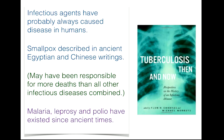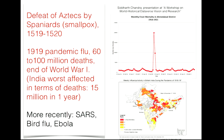Infectious agents have probably always caused disease in humans. Historical records from 2000 to 3000 years ago describe smallpox in Egyptian and Chinese writing, and smallpox is likely responsible for more deaths than all other infectious diseases combined. Malaria, leprosy, and polio are also known to be ancient diseases. Diseases have been crucial contributors to the collapse of civilizations—for example, the defeat of the Aztecs by the Spaniards through smallpox between 1519 and 1520, and the 1919 pandemic flu, which killed approximately 15 million in India alone and between 60 to 100 million globally. More recently, large-scale epidemics include SARS, bird flu, and Ebola.